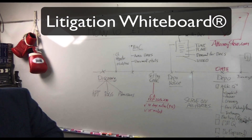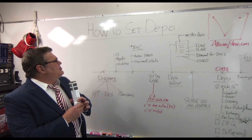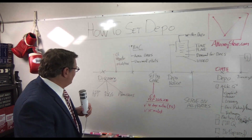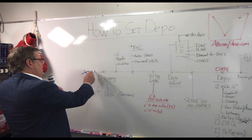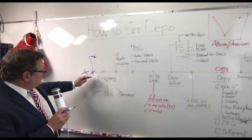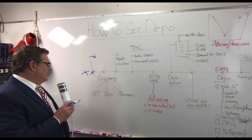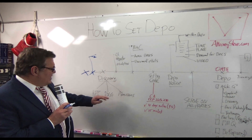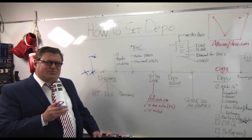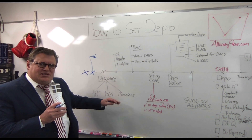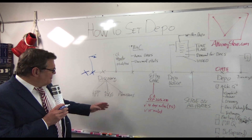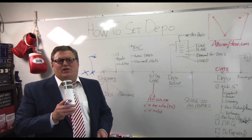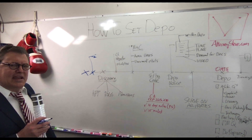So here we are at the Attorney Steve litigation whiteboard. This is general legal information only, not legal advice. We have 'How to Set a Depo.' A deposition is, to me, the most powerful discovery tool you have. When you get into a case, at some point every case gets to discovery — state or federal. You have traditional tools: requests for production, interrogatories, form interrogatories in California, requests for admissions, and subpoenas. But the deposition is one of your best tools.